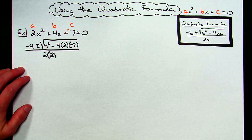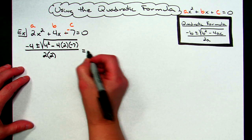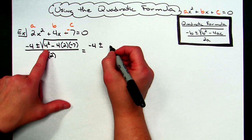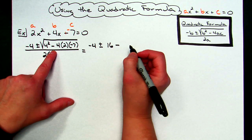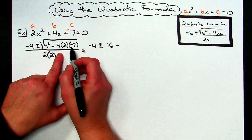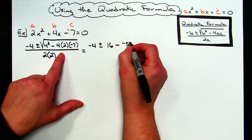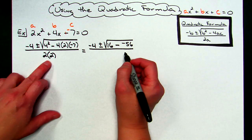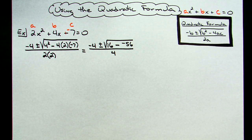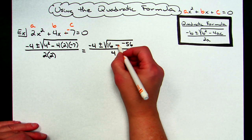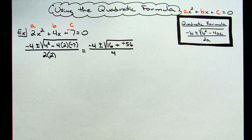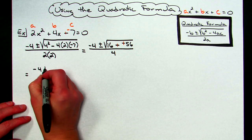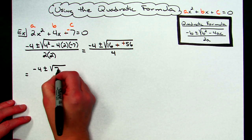From here it's just a matter of simplifying. Negative 4 stays in front. Underneath the radical, 4 squared is 16, minus 4 times 2 times negative 7, which gives me negative 56. That's all underneath the radical, and the denominator is 4. Simplifying underneath the radical — 16 minus negative 56 becomes 16 plus 56 — so I get negative 4 plus or minus the square root of 72, all over 4.